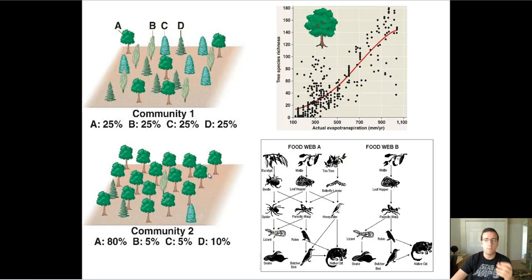So which community is more biodiverse? You would say that they have equal numbers of types of species, but perhaps they don't have an equal balance of those types.